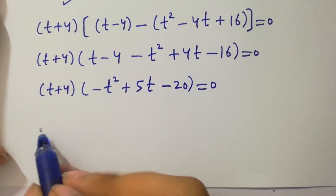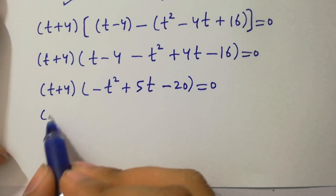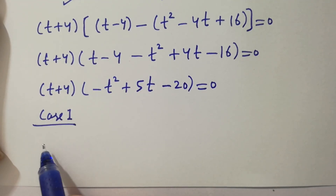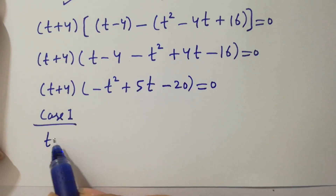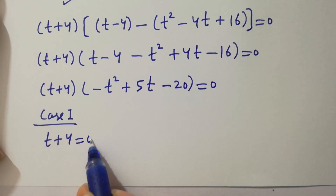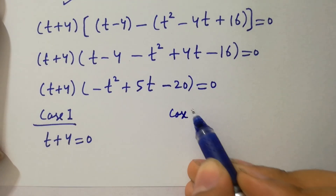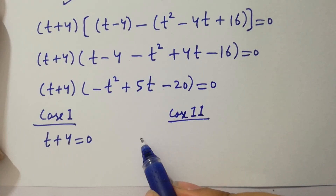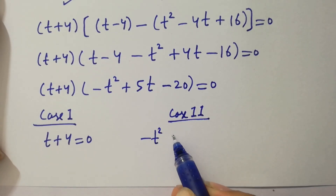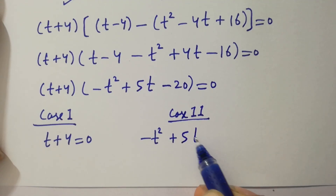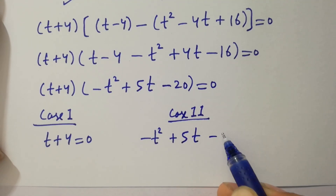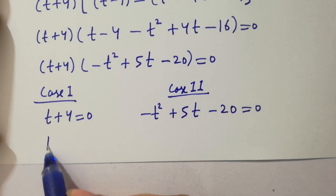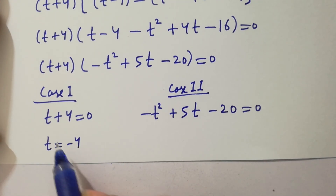So we have here two cases. Case one: t plus 4 equals 0. Case two: negative t squared plus 5t minus 20 equals 0.